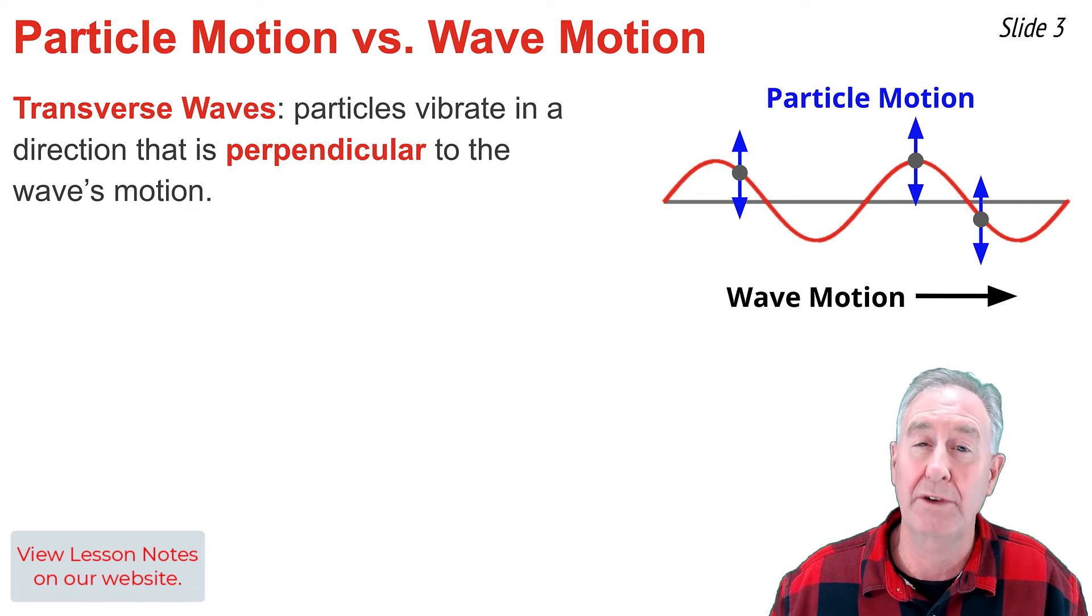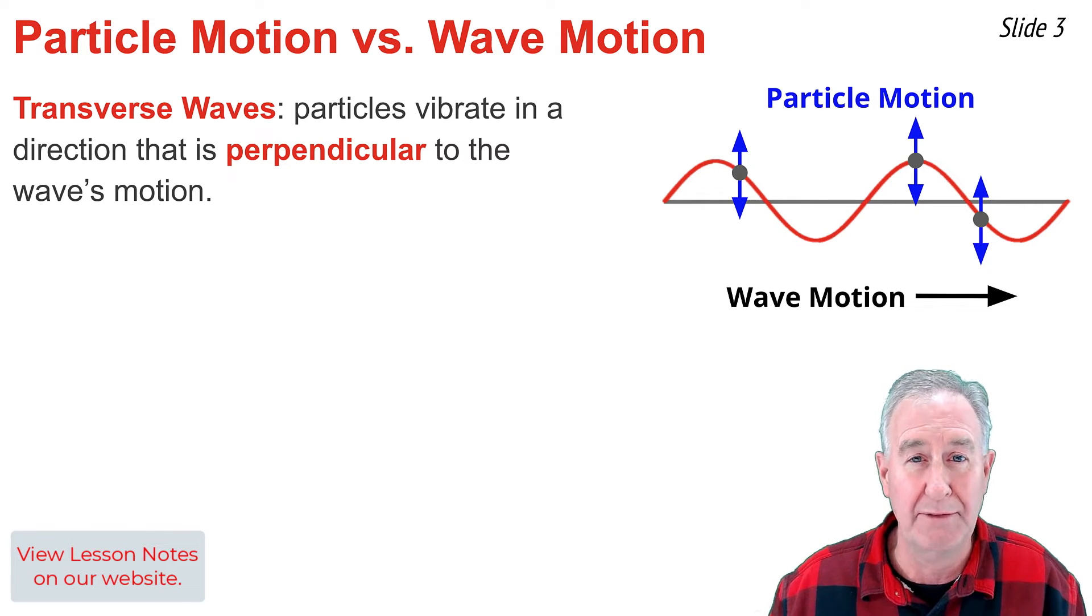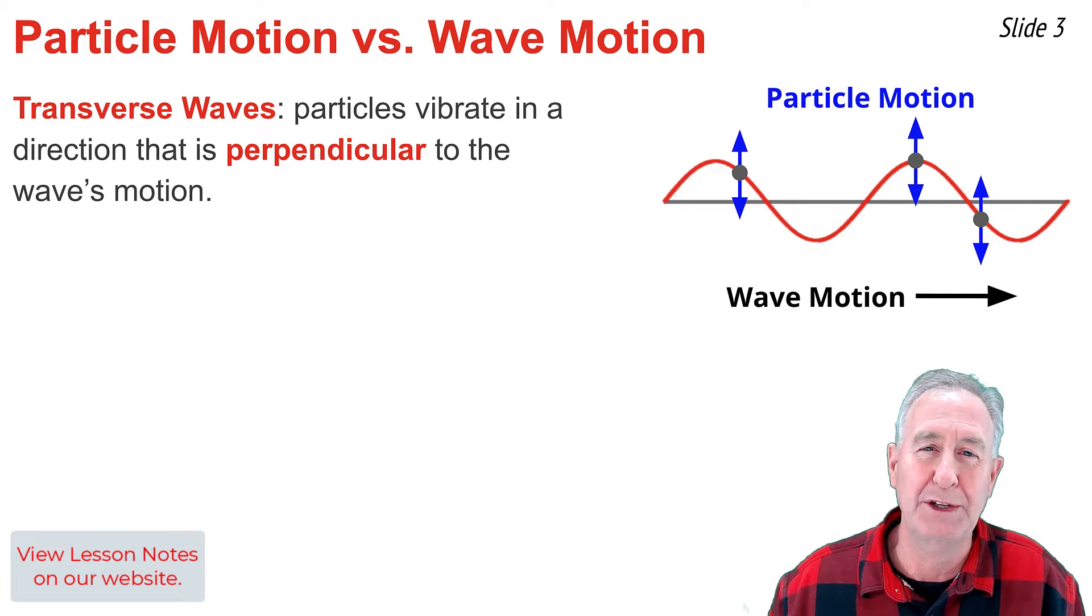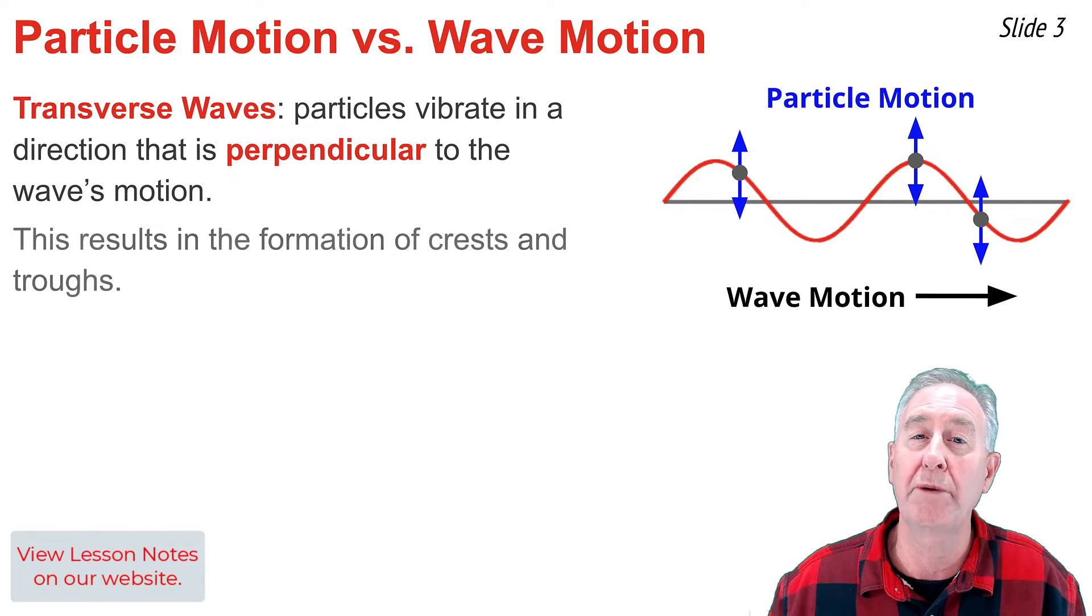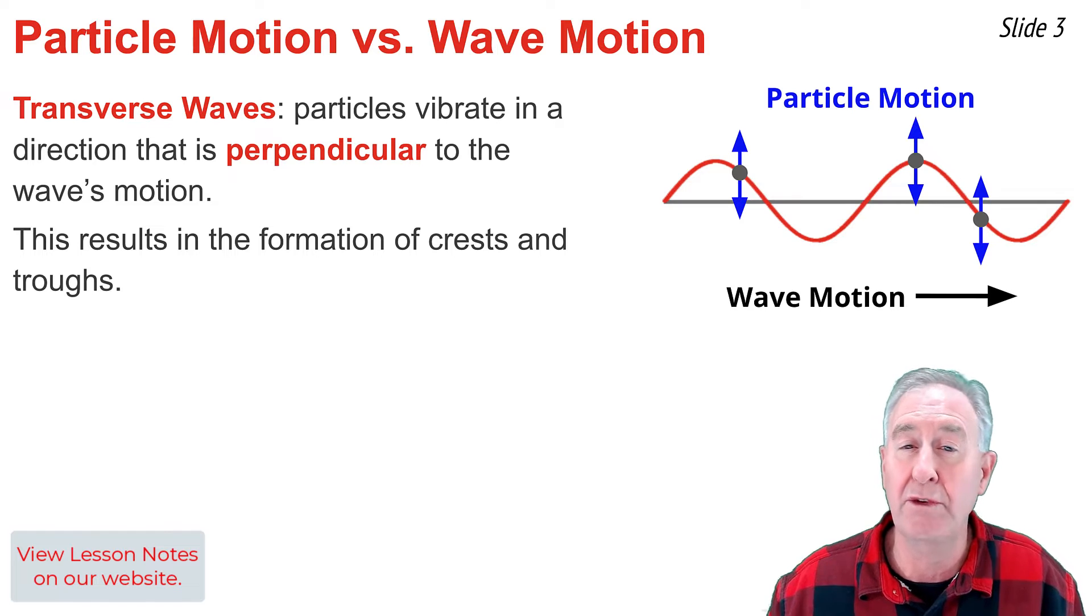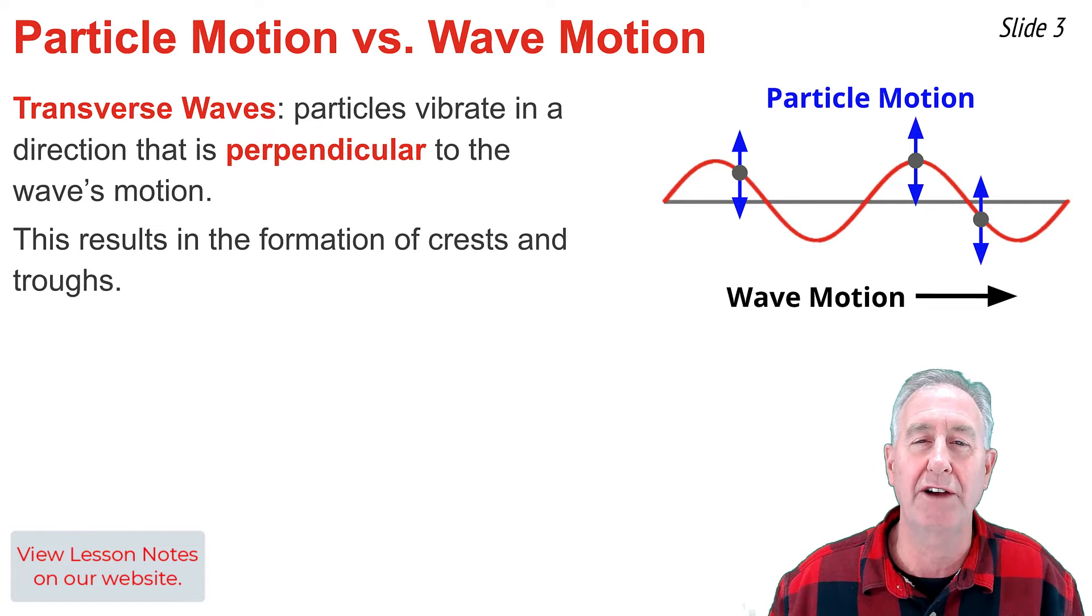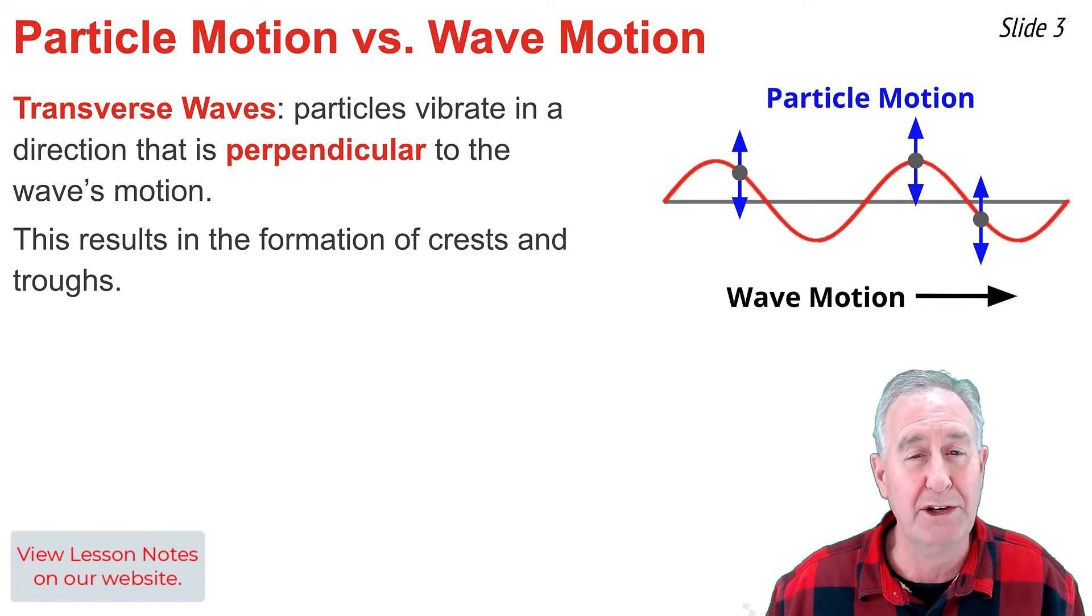In the first example that we saw, we would categorize such a wave as a transverse wave. The particles of the medium are moving perpendicular to the direction of wave transport. The result is that we would form crests and troughs, and we would see the familiar pattern of crests and troughs moving from left to right.